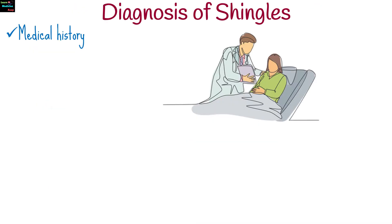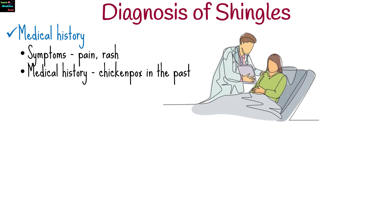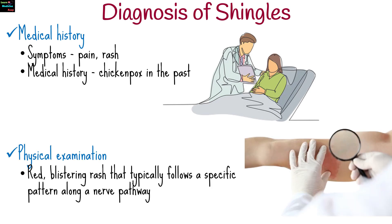Shingles is typically diagnosed based on its characteristic symptoms and physical examination by a healthcare professional. Your healthcare provider will ask about your symptoms, including any pain, rash, or other sensations, and will inquire about your medical history, including whether you've had chickenpox in the past. They will examine the rash and affected area for characteristic signs such as a red, blistering rash that follows a specific pattern along a nerve pathway.